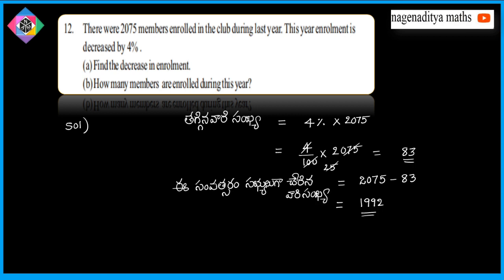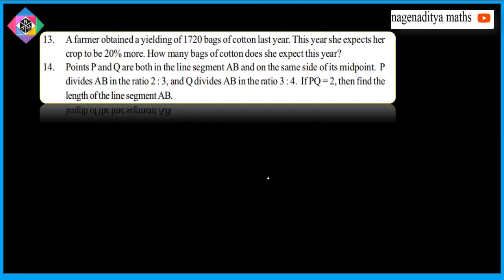That is equal to 1992. Next, 13th problem: a farmer obtained a yield of 1720 bags of cotton last year. This year she expects her crop to be 20% more. How many bags of cotton does she expect this year?